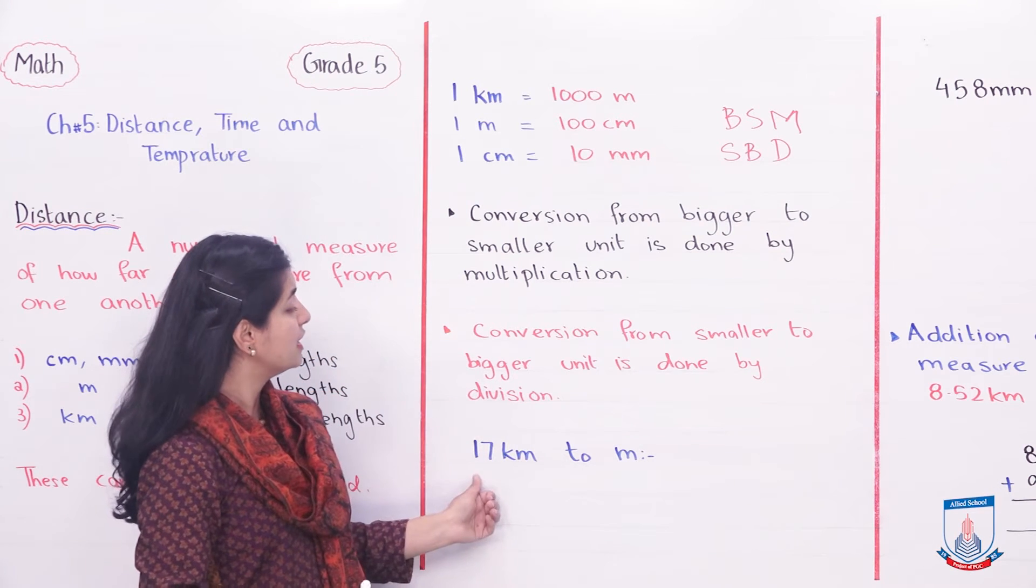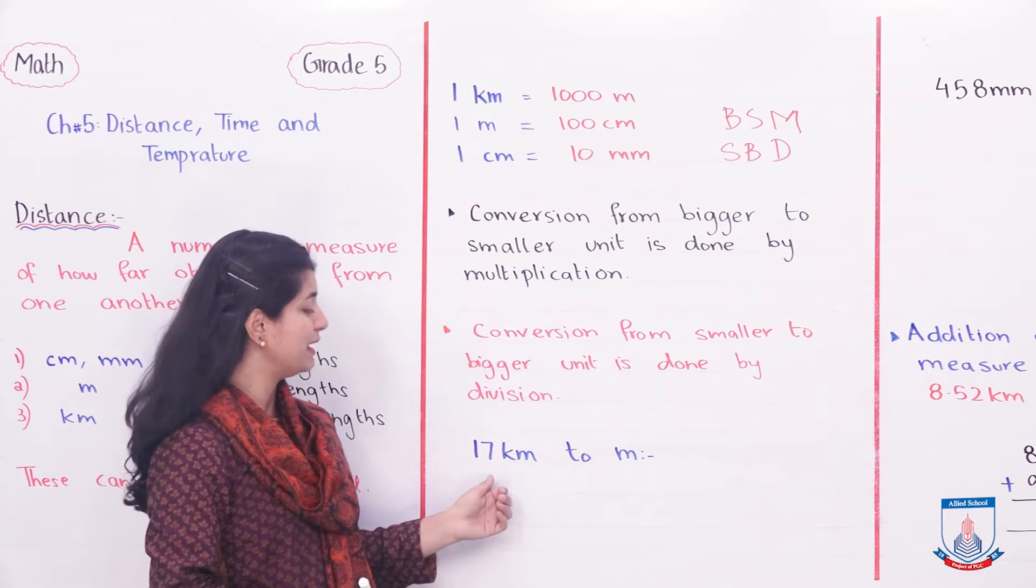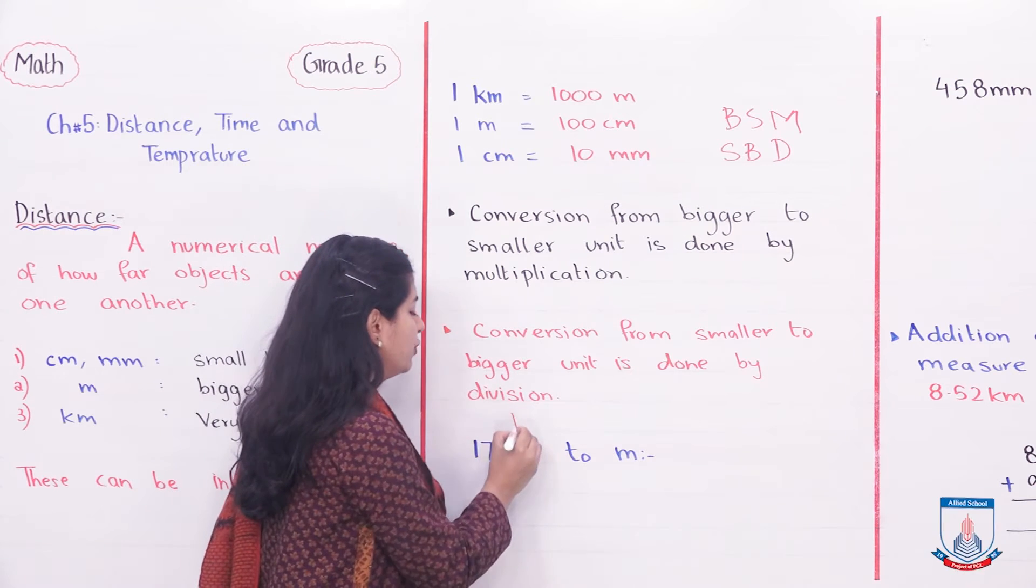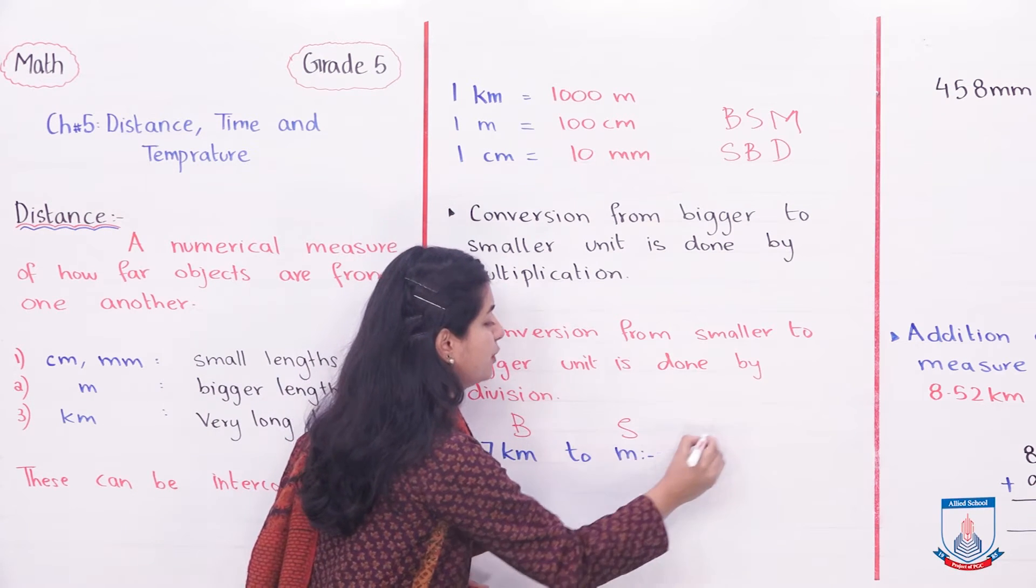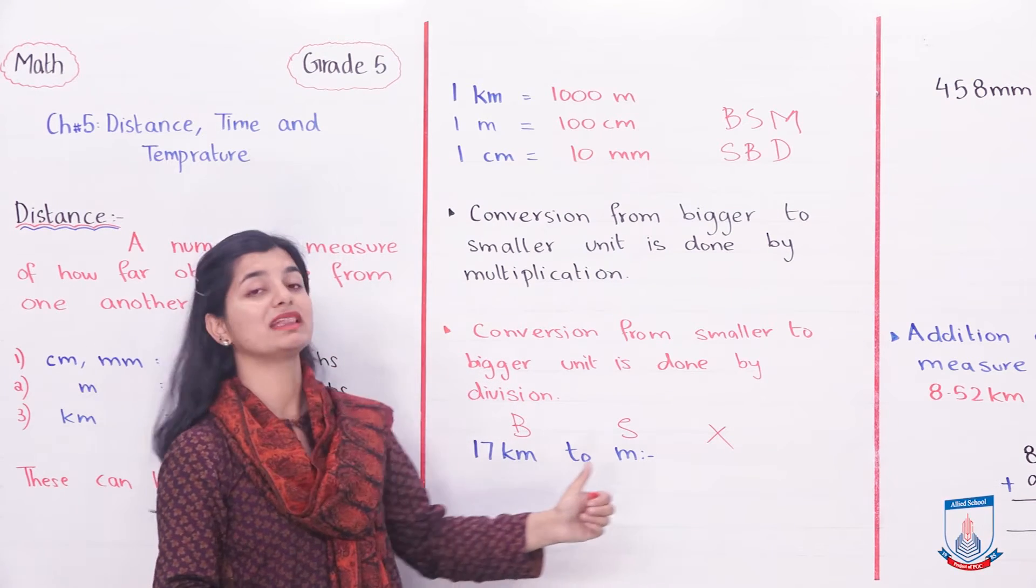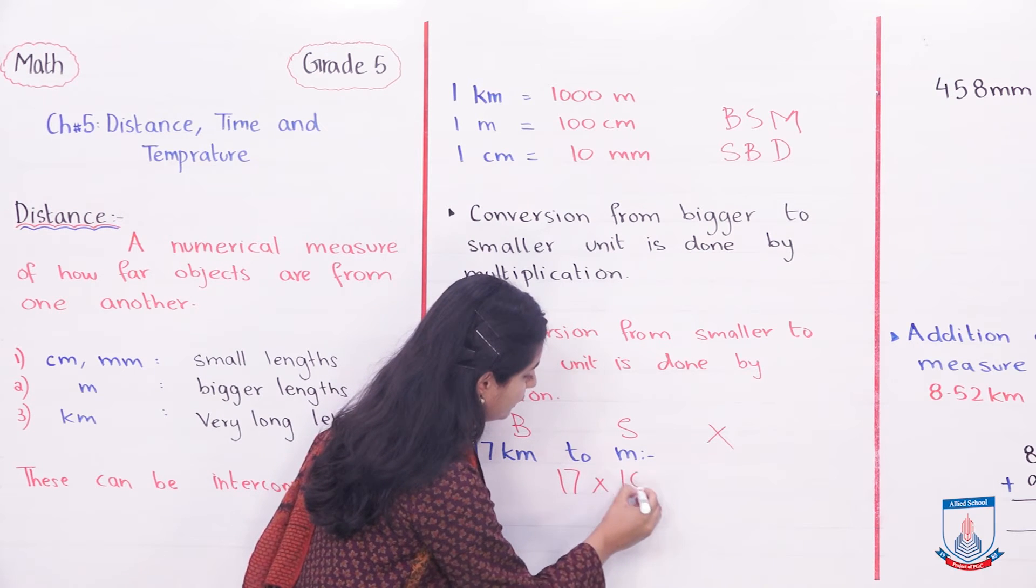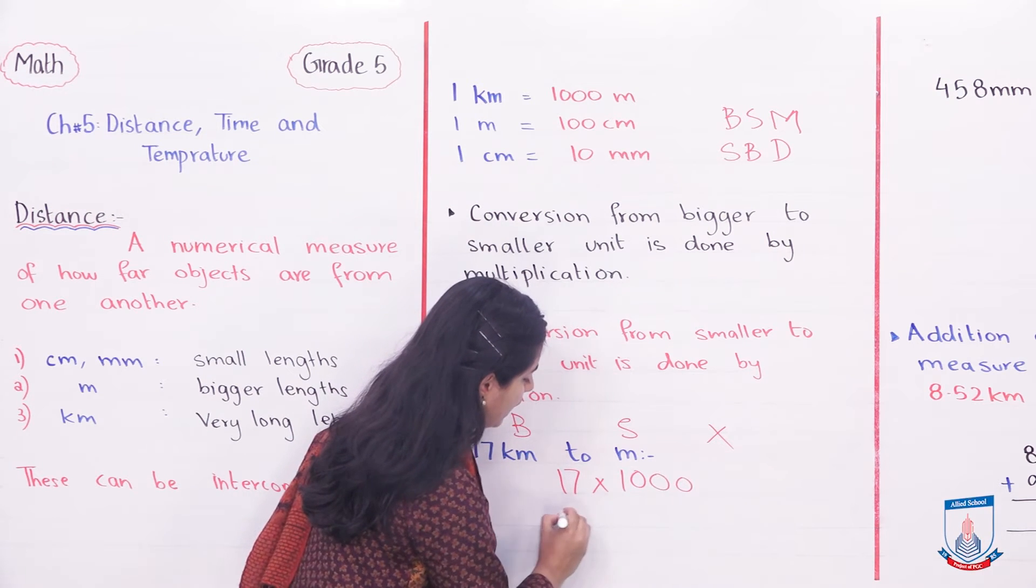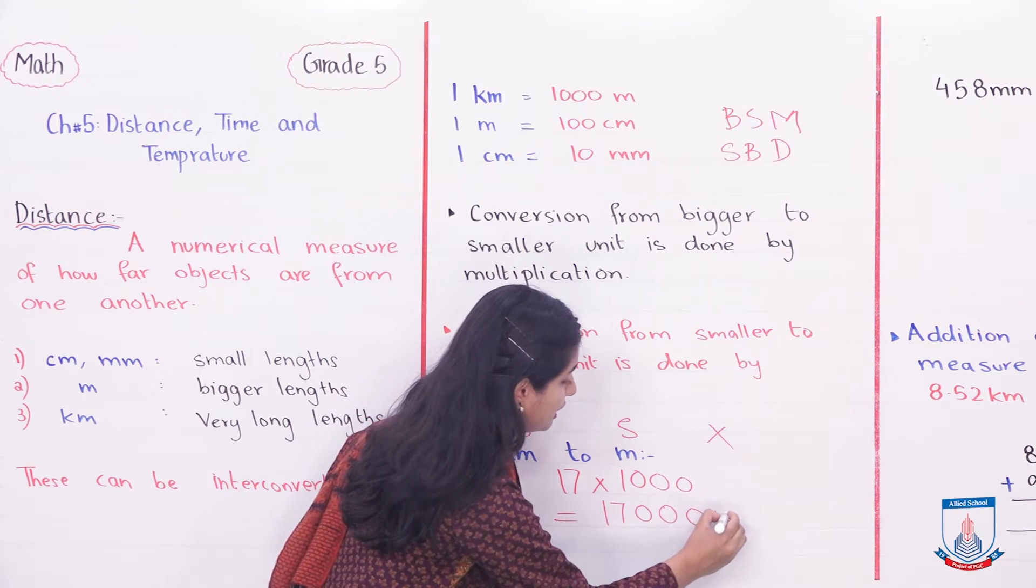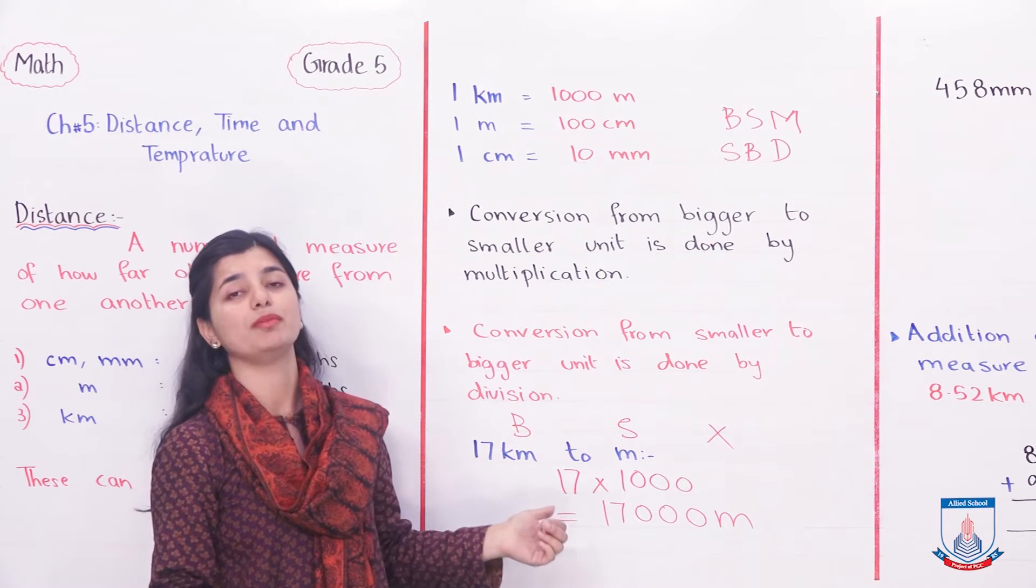If we look at 17 kilometers, we want to express it in meters. First thing to recognize - kilometers is a big unit. We have to go to small units. When we go to small units, we are going to multiply. Multiply by what? How many meters are in 1 kilometer? Thousand. So we have to multiply 17 by 1,000. The answer is 17,000 meters. 17,000 meters equals 17 kilometers.